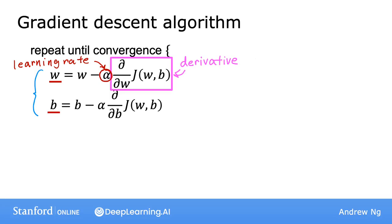In order to do this, let's use a slightly simpler example where we work on minimizing just one parameter. So let's say that you have a cost function J of just one parameter w, where w is a number. This means that gradient descent now looks like this. W is updated to w minus the learning rate alpha times d over dw of J(w). And you're trying to minimize the cost by adjusting the parameter w.